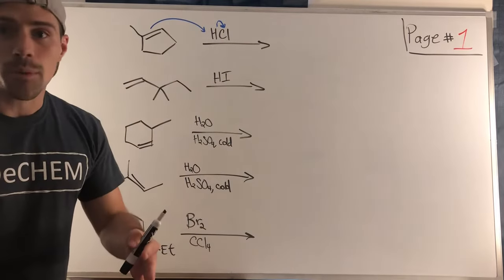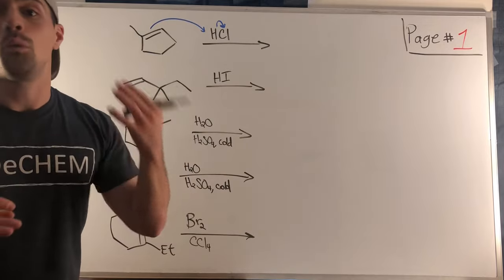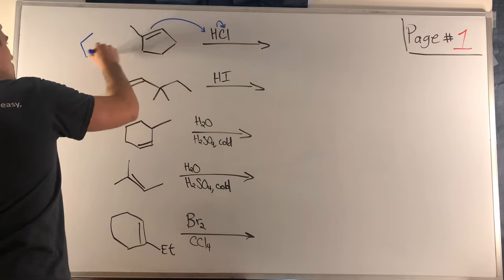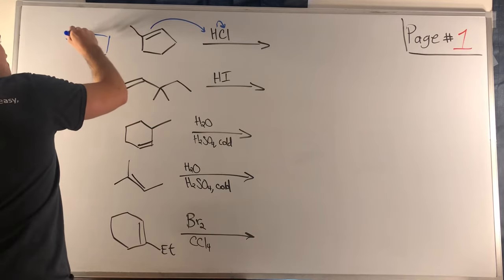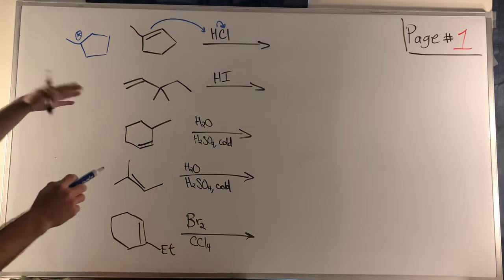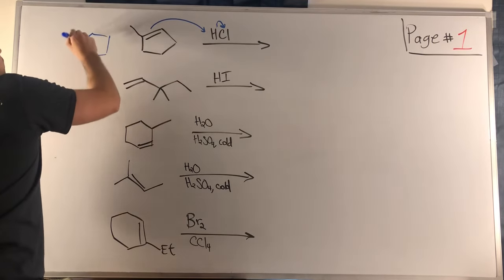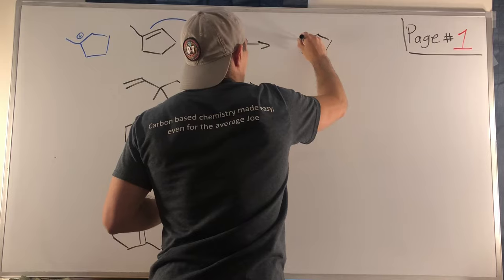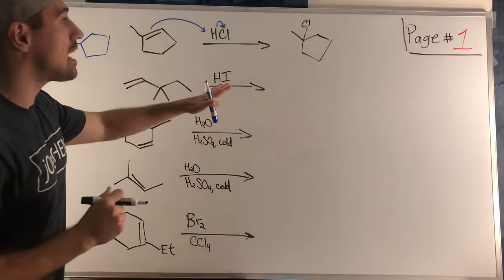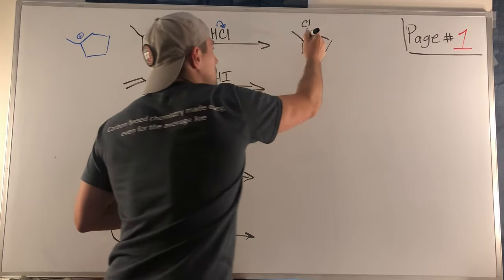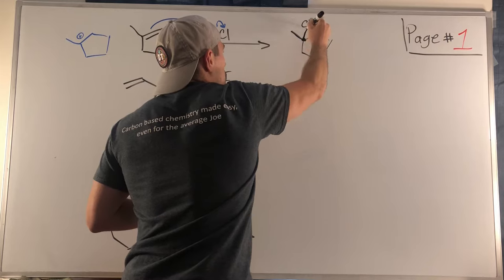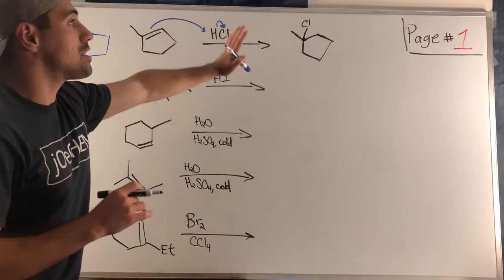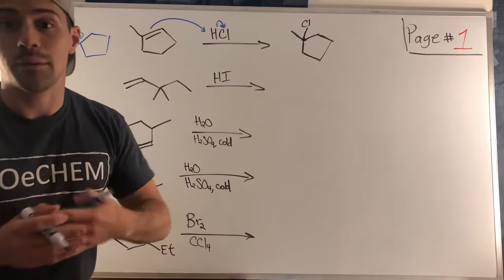We're forming carbocations — we know they can shift. Let's draw the one we form, see if we can shift it, and then finish the reaction. The best carbocation we can form here is a tertiary one. Chlorine is just going to attack; we can't shift that carbocation to make it more stable — tertiary is the best we can do. In this case we do not create a stereocenter because we are not attached to four different things: the methyl group and chlorine, but this group and this group are the same. We just have to reflect the correct regiochemistry.